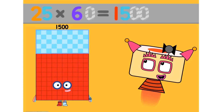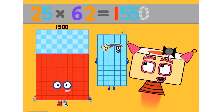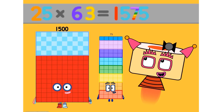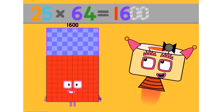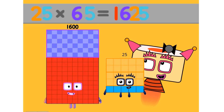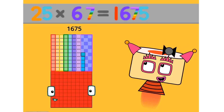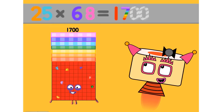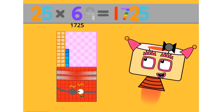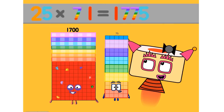25 times 60 equals 1500. 25 times 61 equals 1525. 25 times 62 equals 1550. 25 times 63 equals 1575. 25 times 64 equals 1600. 25 times 65 equals 1625. 25 times 66 equals 1650. 25 times 68 equals 1700. 25 times 69 equals 1725. 25 times 70 equals 1750. 25 times 71 equals 1775.